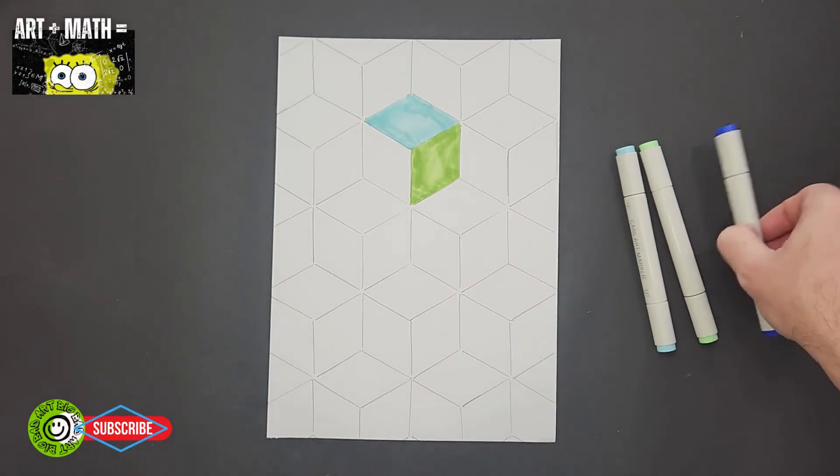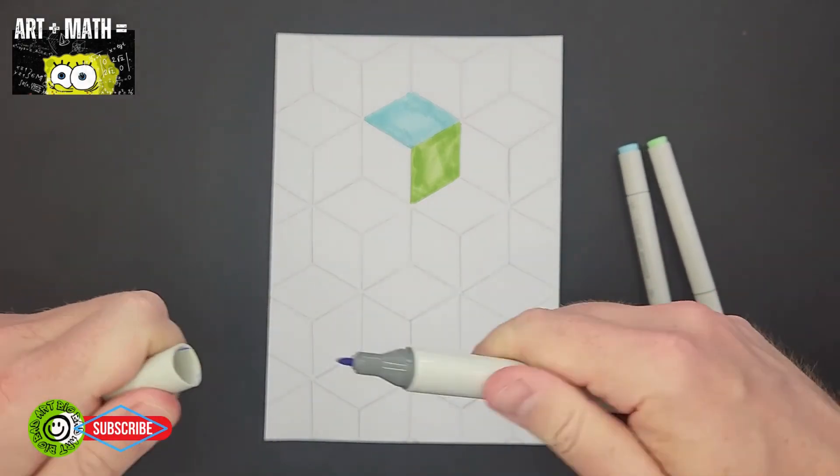Now you want the darkest color on the left side. And this will make like a 3D effect.